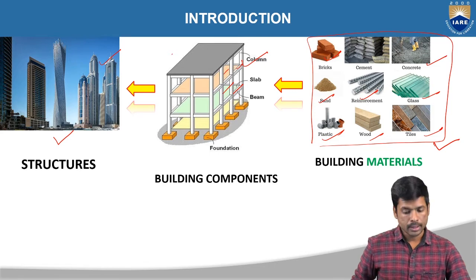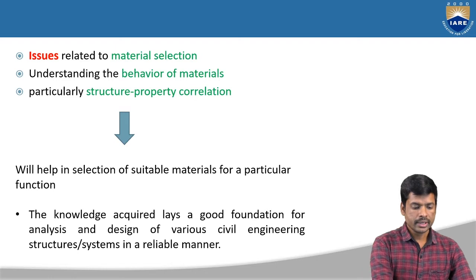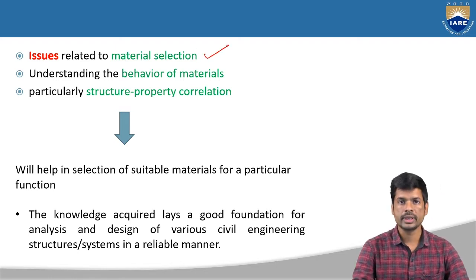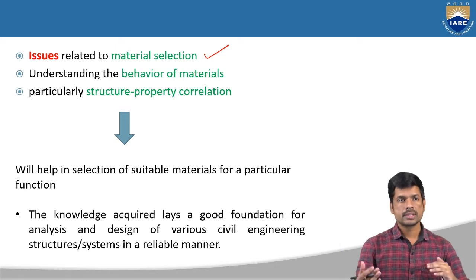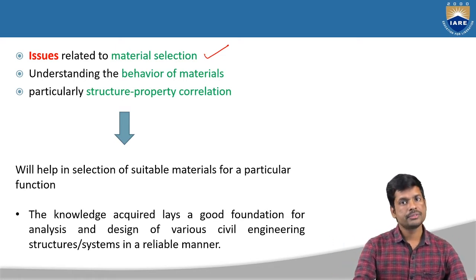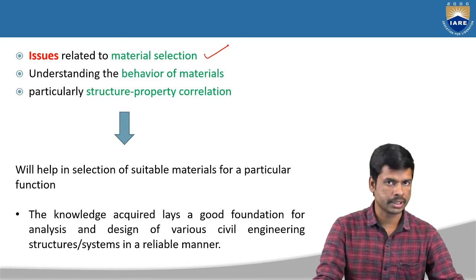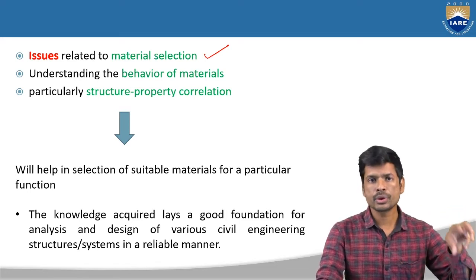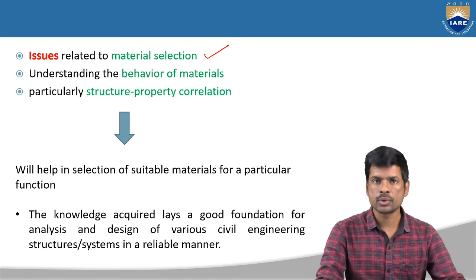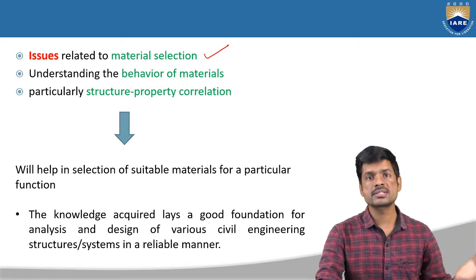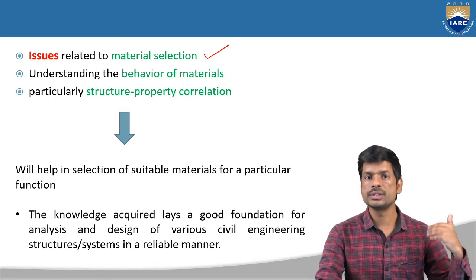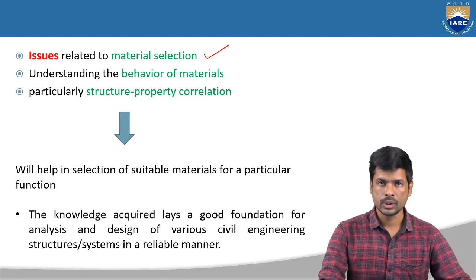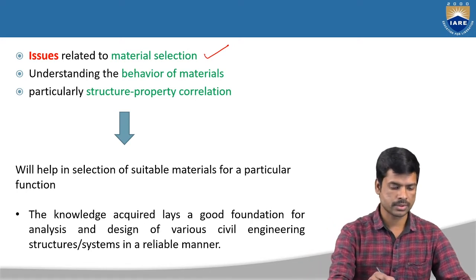We have to know about these materials — their properties, classification, and applications — so we can use them in a particular function. That is why we are going to learn about building materials. Now coming to this subject, we are going to discuss the issues related to material selection. Whenever you select any material, what issues arise? For example, in a kitchen we have to use water-resistant materials, and for flooring we need materials that resist loads. Depending upon function and location, we choose the appropriate material.